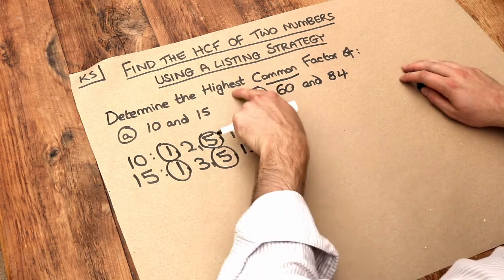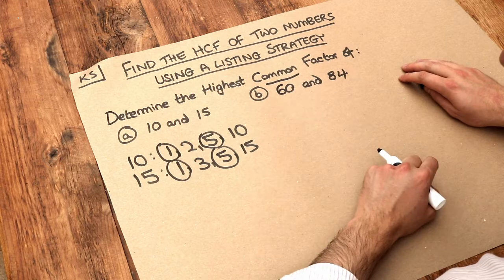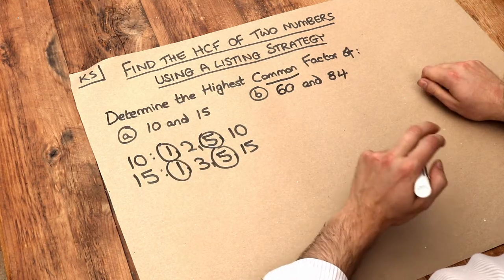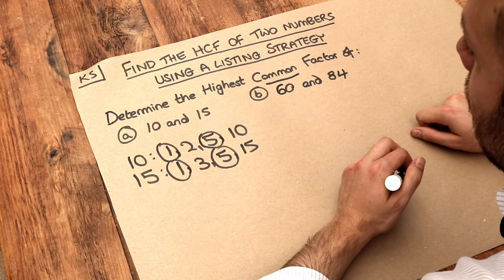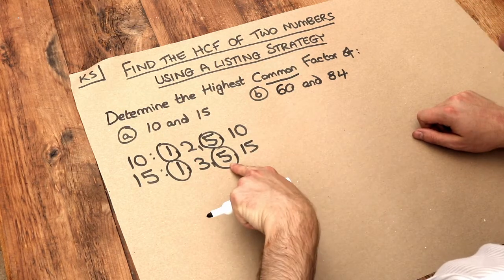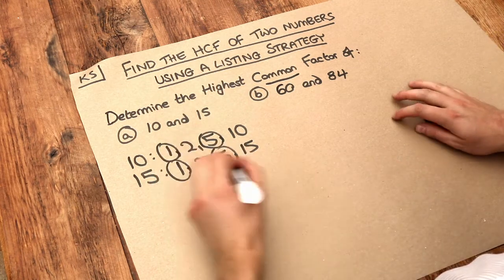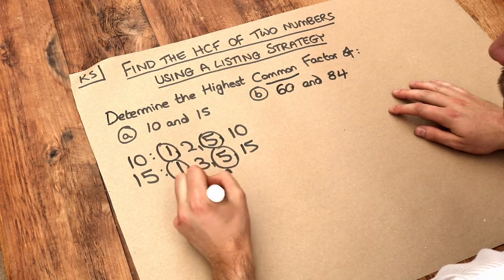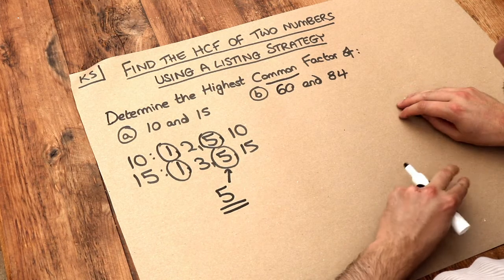Now we want the highest of those common factors, because 1 is not going to be an interesting common factor since any two whole numbers you think of are always going to have a common factor of 1. So we want this highest common factor here, which is 5. So the highest common factor is 5. That's the answer for this first question.